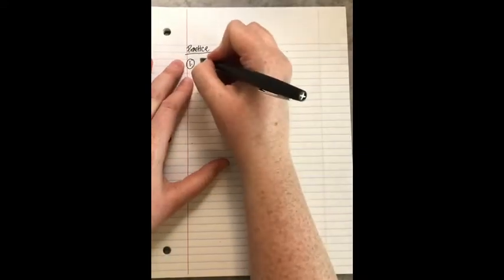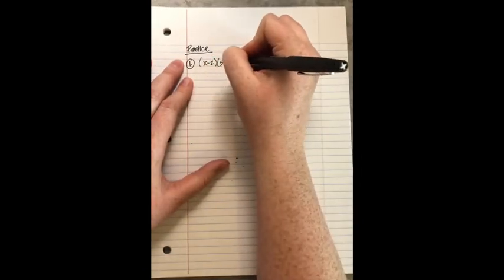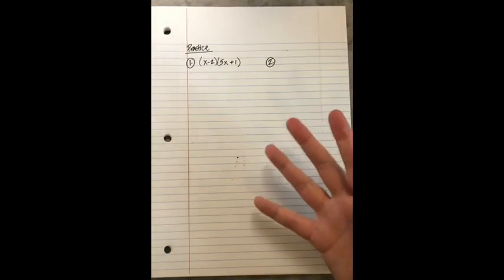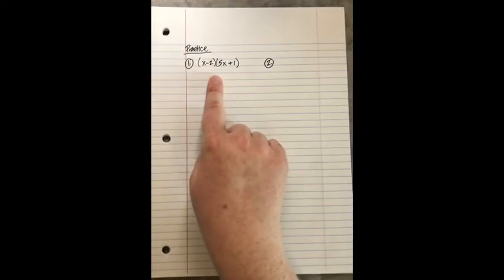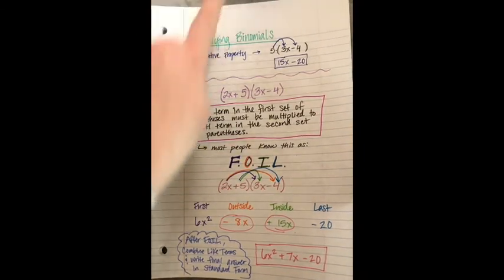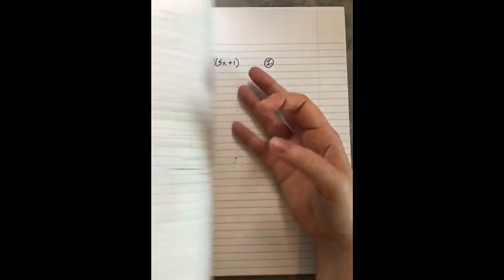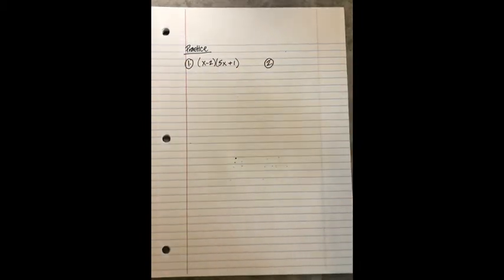Practice problem number one: (x − 2)(5x + 1). I should probably mention why your lesson is called Multiplying Binomials. You have two sets of parentheses next to each other, which means you're multiplying, and bi means two — so there are two terms in each set of parentheses. Two terms here, two terms here. That's why the lesson is called Multiplying Binomials.